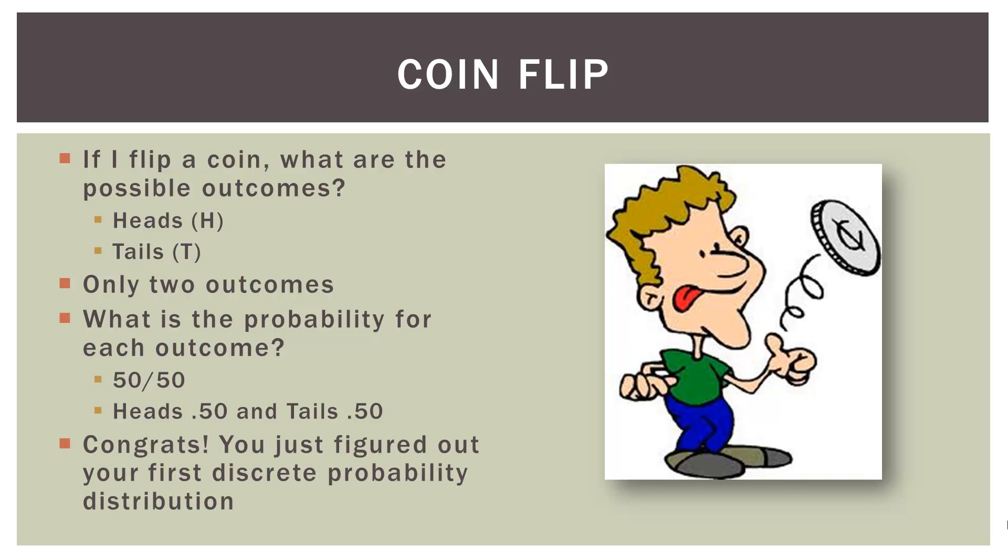Congratulations — you just figured out your first discrete probability distribution. This is a discrete probability because in discrete random variables, the outcomes are finite. Here we only have two outcomes: heads or tails.